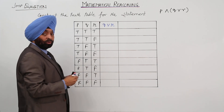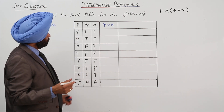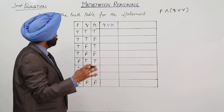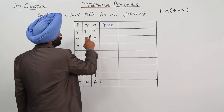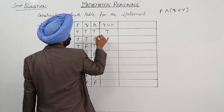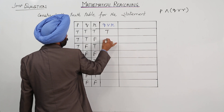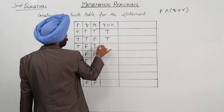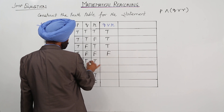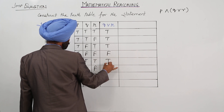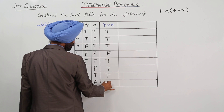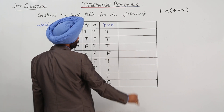In the OR part, if any one of the statements is true, the result is true. So: true or true is true, true or true is true, true or false is true, false or true is true, both false is false, true or true is true, true or true is true, true or false is true.